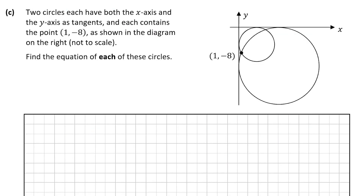Finally, let's go through part C. This part requires a bit more thinking than the other two parts. We're told that two circles have both the x-axis and the y-axis as tangents, and each contains the point (1, minus 8) as shown in the diagram. We're asked to find the equation of each of these circles.